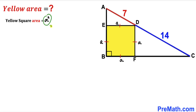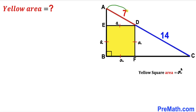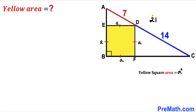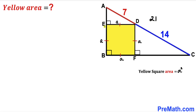Now let's focus on the hypotenuse AC of this right triangle. Hypotenuse AC equals the sum of segment AD and segment CD. AD is 7 and DC is 14, so adding them gives us 21 units. Therefore hypotenuse AC is 21 units.